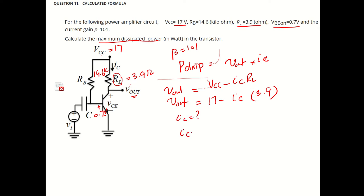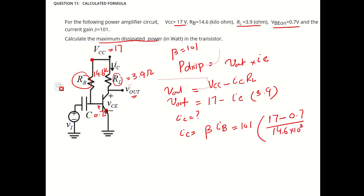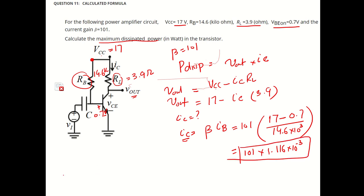IC is basically, based on the given information, beta times IB. Beta is 101. And IB will be VCC minus the drop here — 17 minus 0.7 — divided by RB, which is 14.6K. So IC comes out to be 101 times 1.116 times 10 to the power minus 3. Now you know the value of IC; you can plug in this value to get Vout.